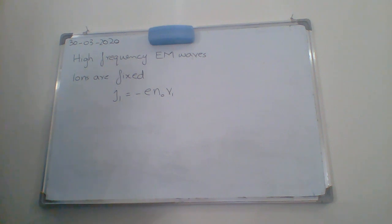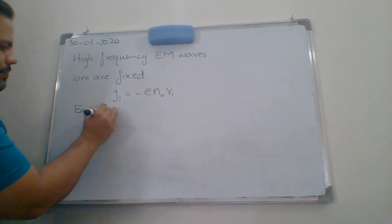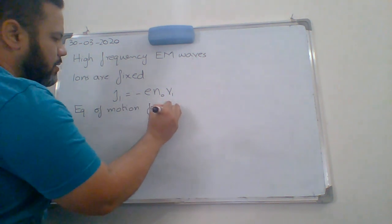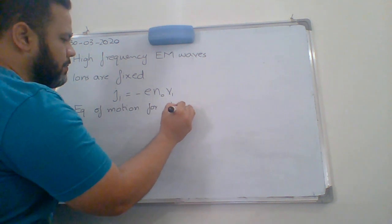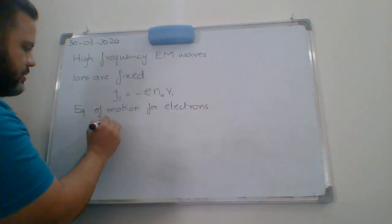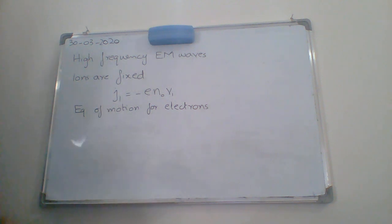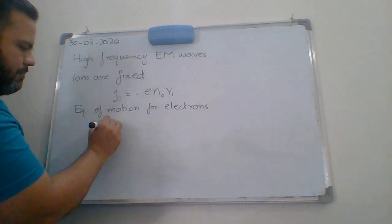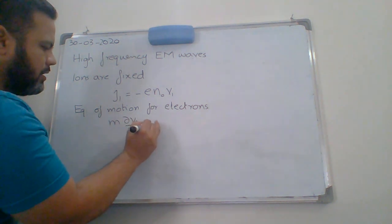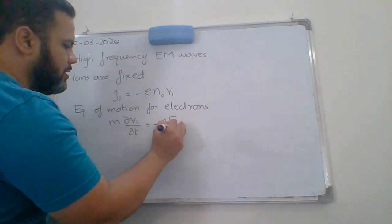From where we are going to get this V1? We are going to write the equation of motion for electrons. I am not going to linearize this equation again. This is basically M partial V1 by partial T equals minus E E1.